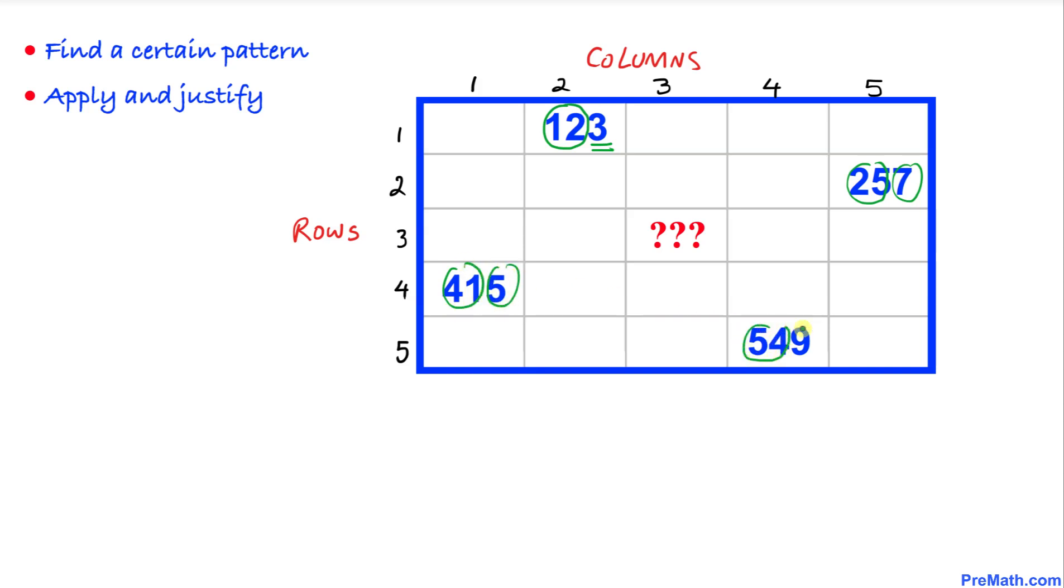Now we're going to focus on this question mark. Since this cell, this grid location, is 3 rows and 3 columns as you can see, so it's going to be 3, 3. And the last digit is going to be just add them up: 3 plus 3 is 6. So our answer turns out to be 336.